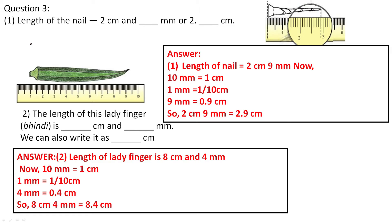Question number 3: The length of the nail shown in the drawing is dash centimetre and dash millimetre, or 2 point dash centimetre. You can find that the nail is 2 centimetre and 9 millimetre. Counting from 0: here is 1 full centimetre, then 2 centimetre, and it touches the 9th small line after 2, so it is 2.9 centimetre. The length of the nail is exactly 2.9 centimetre.